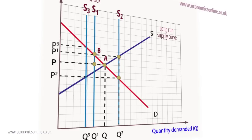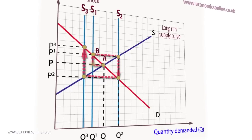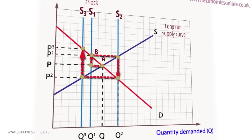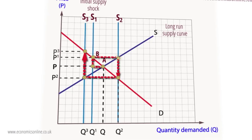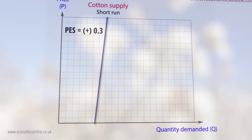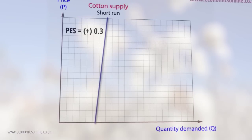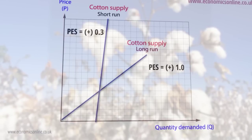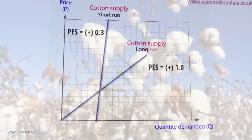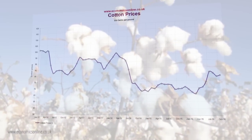Price volatility is seen as a market failure, in that next year's output is determined by this year's price rather than by prices prevailing at the time, and the market moves towards disequilibrium rather than a stable equilibrium. This is one of the reasons why agricultural markets are commonly regulated and supported by governments. It has been estimated that the short-run PES for cotton production in the US is just 0.3, whereas in the long run it increases to 1.0 — as a result, cotton prices can become very unstable.